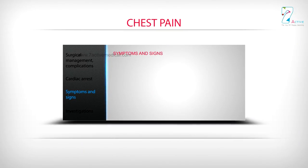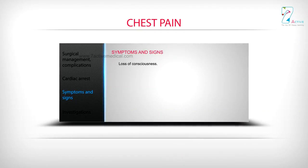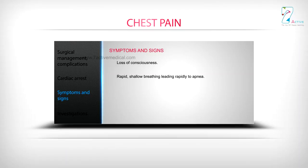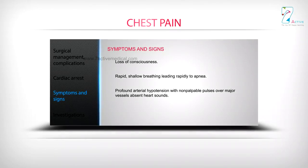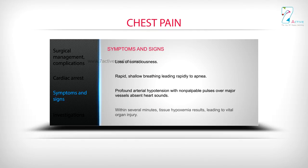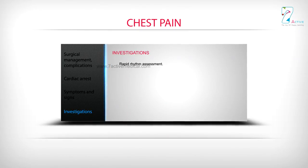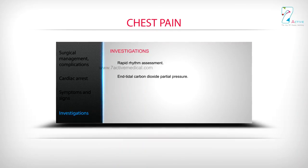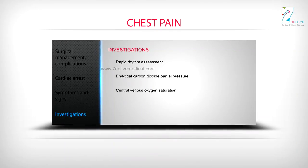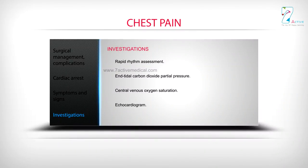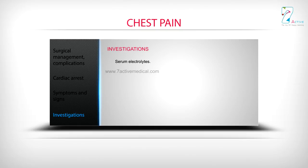Symptoms and signs: loss of consciousness, rapid shallow breathing leading rapidly to apnoea, profound arterial hypotension with non-palpable pulses over major vessels, and absent heart sounds. Within several minutes, tissue hypoxia results, leading to vital organ injury. Investigations: rapid rhythm assessment, end-tidal CO2 partial pressure, central venous oxygen saturation, echocardiogram, serum electrolytes, 12-lead electrocardiogram, and serum lactate.